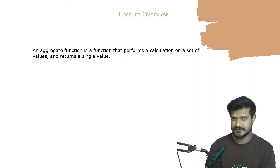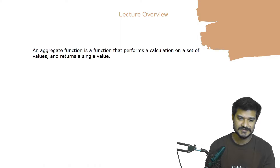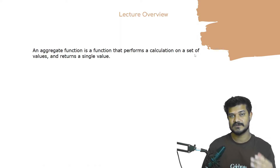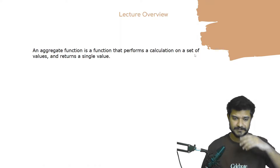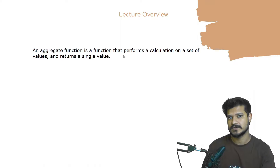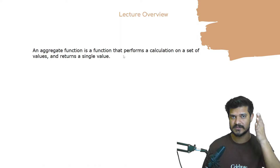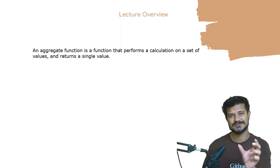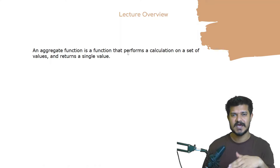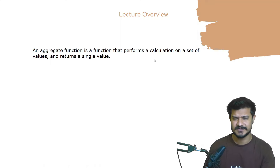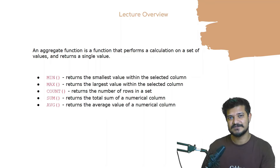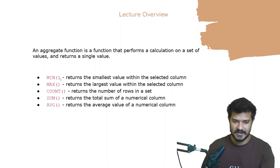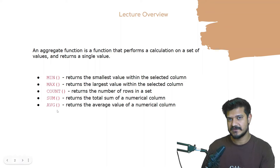We'll start with aggregate functions. An aggregate function is a function that performs a calculation on a set of values, or a set of rows, and returns a single value. For example, the sum function takes a list of rows, picks a particular column, adds the values, and returns a single result. The aggregate functions we'll go through are min, max, count, sum, and average.